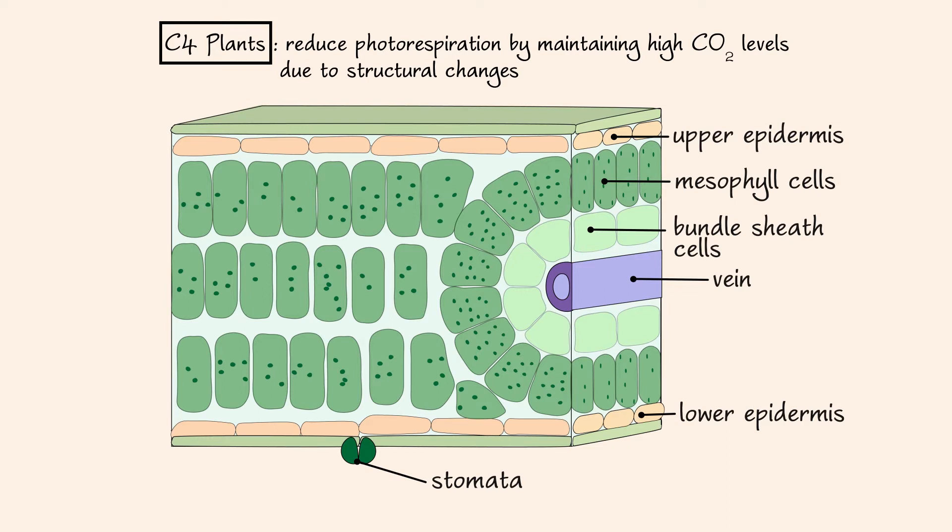Let's investigate how structural rearrangement can reduce photorespiration. We will use this zoomed in picture of the mesophyll cell, bundle sheath cell, and vein to explain the process. Recall that plants in hot, dry environments have a high concentration of oxygen and a low concentration of carbon dioxide in the leaf due to the closure of the stomata.